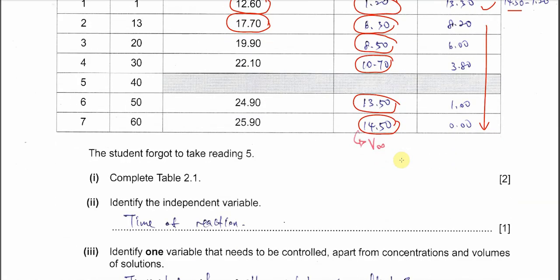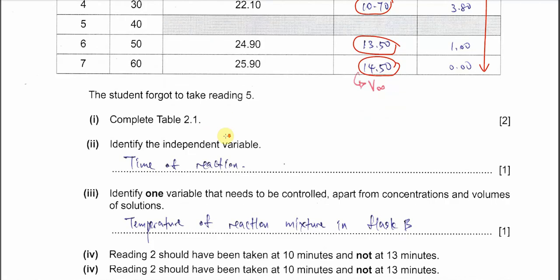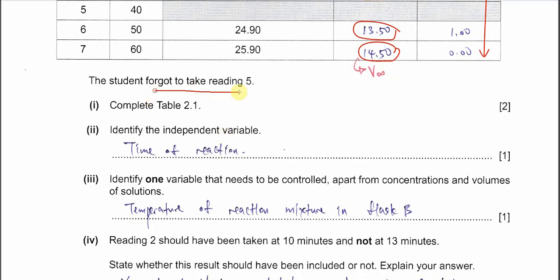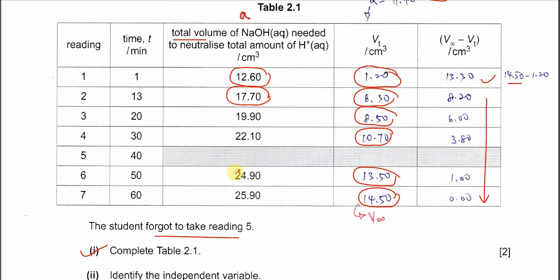The student forgot to take reading 5, so we will get it from the graph later. Part 1 is done. Part 2: identify the independent variable. This is very obvious — it is time. When different times are used, Vt will be different; we change the time and get different Vt values. So the independent variable is time, and the dependent variable is Vt.